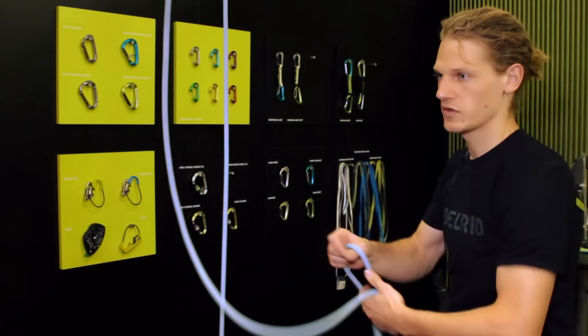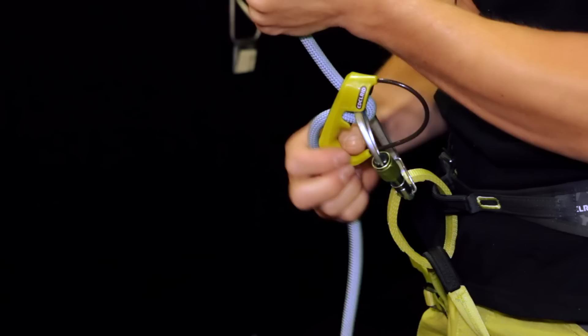For belaying, it's exactly the same as a Mega Joule. You can pay out the rope either by using it as a cuber, or by lifting up the handle and paying out the rope like this.